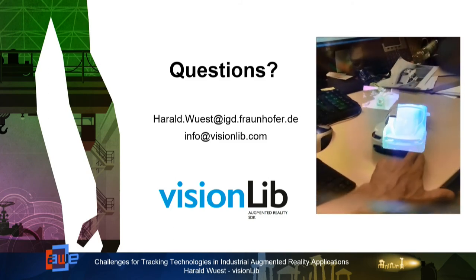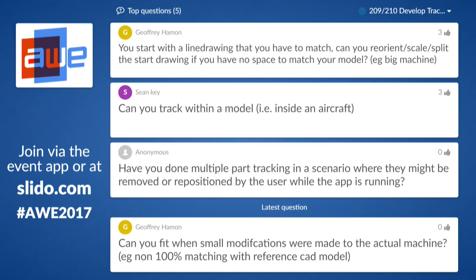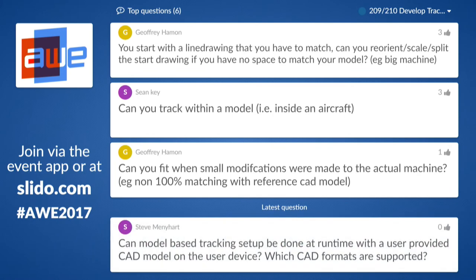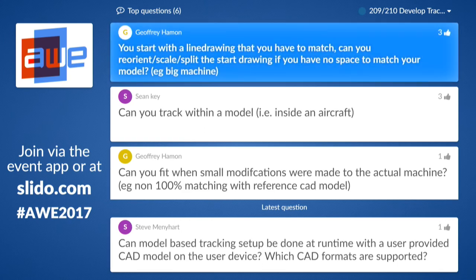Thank you very much for your attention. If you have any questions you can write me a mail or ask me directly. From the audience: you start with a line drawing that you have to match — can you reorient or rescale? Is it possible to use only a part of the line drawing or rescale it? Sometimes you have a big machine in front of you and don't have the space to match the full line drawing. The reference model can be very large, but the process we use is: from a certain view, what is expected — you just take a certain part of the line. So it can be just a part; you don't need to see the whole model.